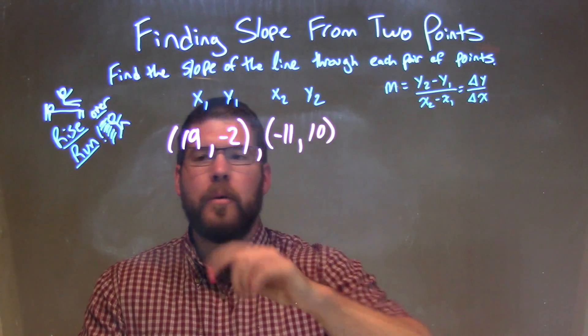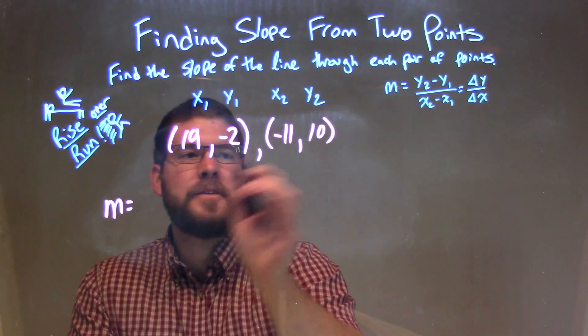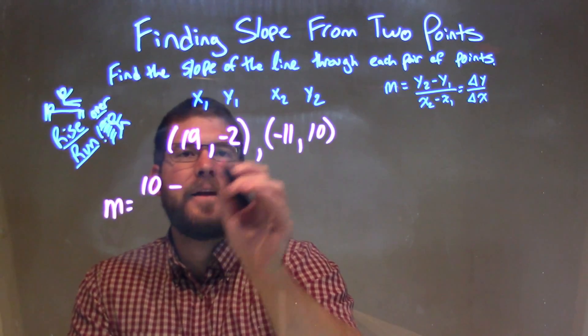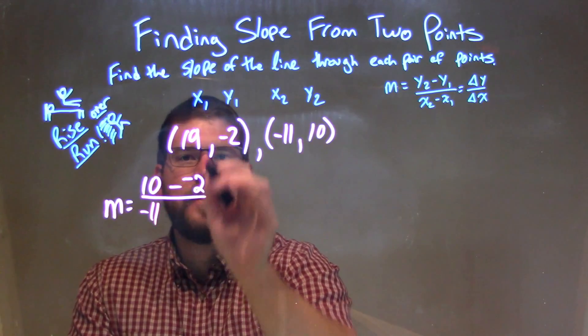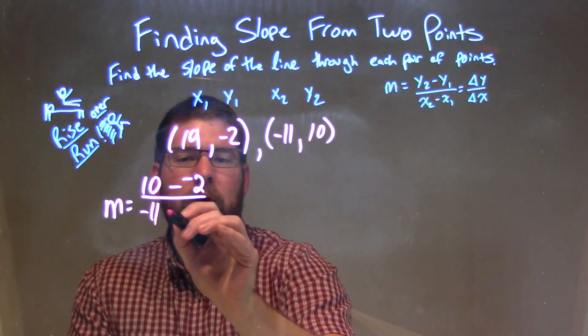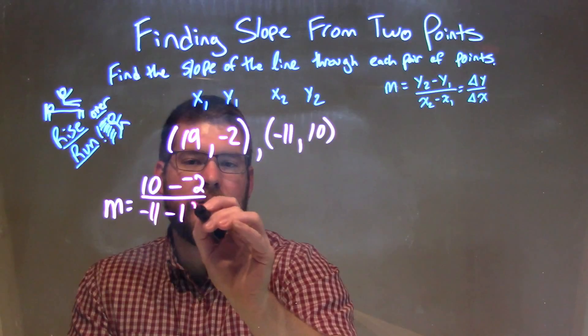So we follow our formula. Our slope M is y2, which is 10, minus y1, which is negative 2. Over x2, negative 11, minus my x1, which is minus a positive 19.